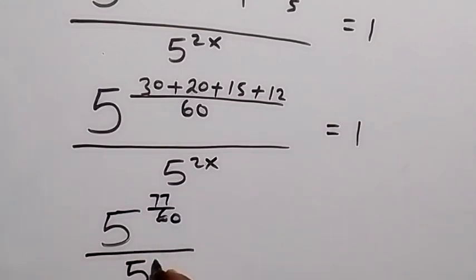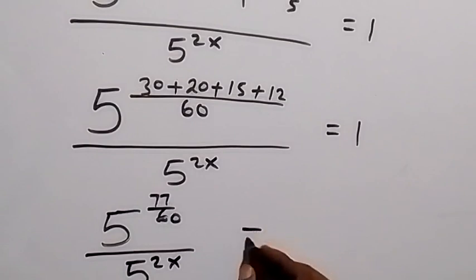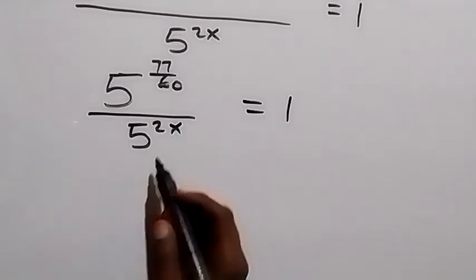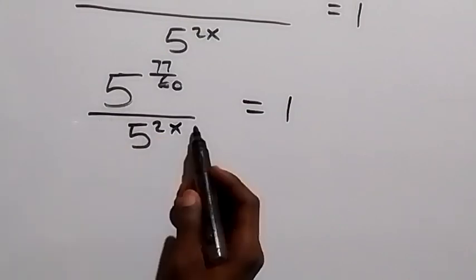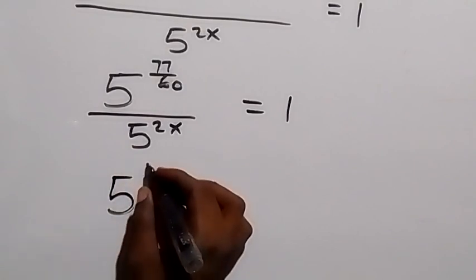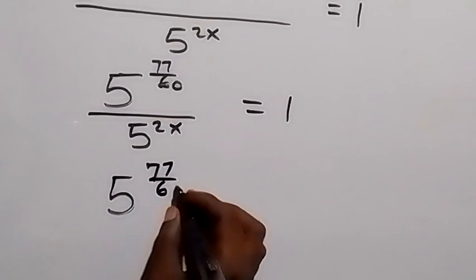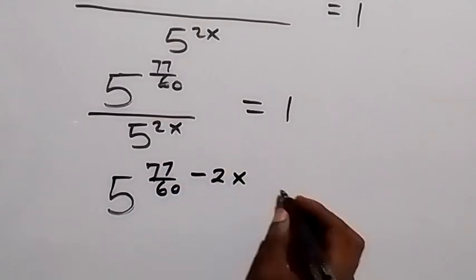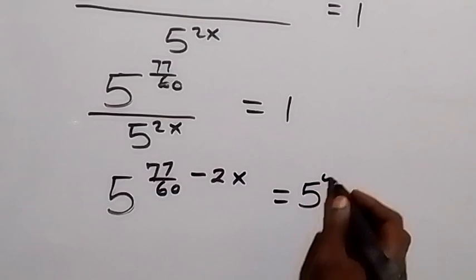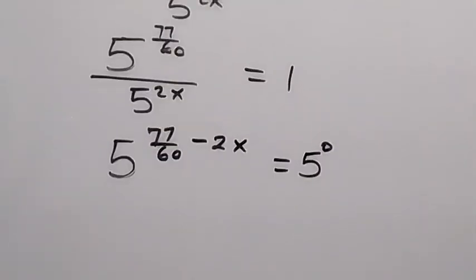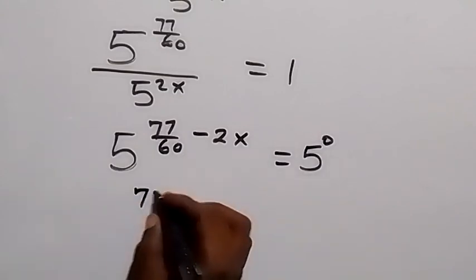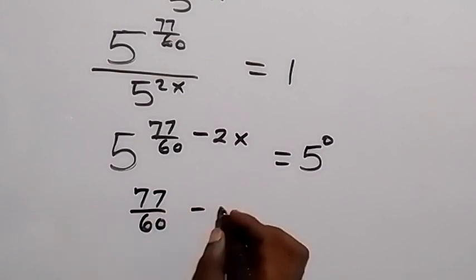From here we apply the law of indices — we have the same base and we are dividing, so we subtract the powers. This becomes 5 raised to power (77/60 minus 2x). Then we change 1 to base 5 as well, giving 5 raised to power 0, because any number raised to power 0 is 1.